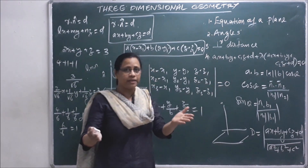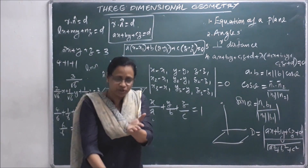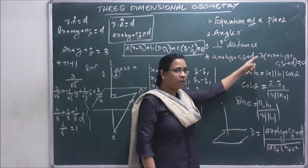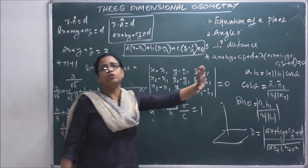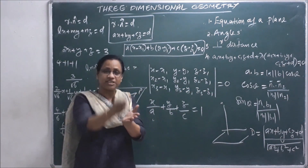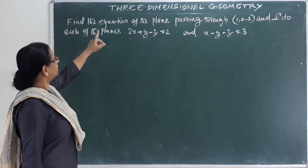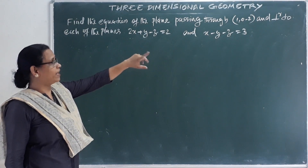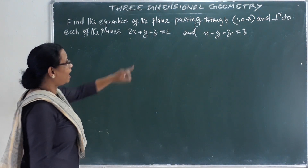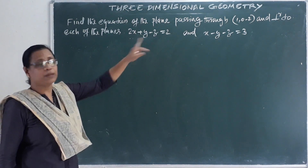The intersection of two planes gives: the first plane plus lambda times the second plane equals zero. Now, find the equation of the plane passing through the point (1, 0, -2), which passes through one plane. That plane is perpendicular to each of these two given planes.